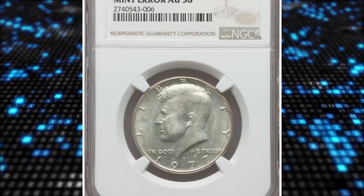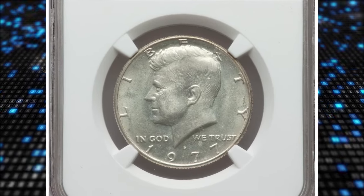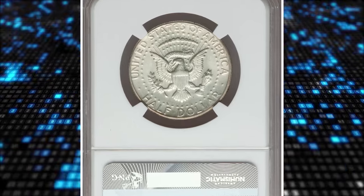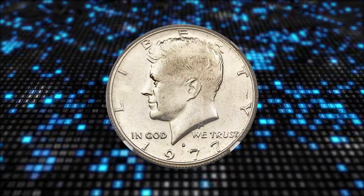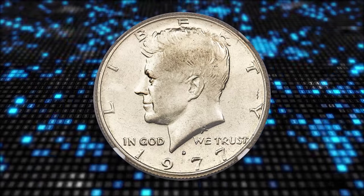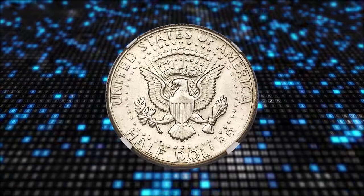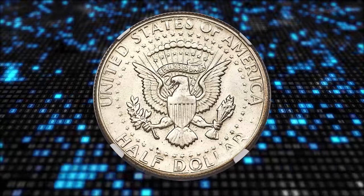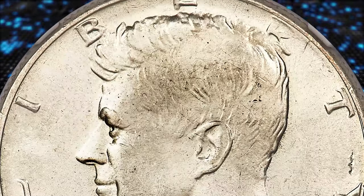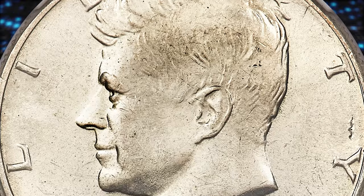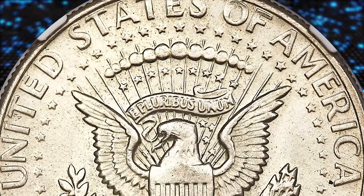Moving on with the 1977-D Kennedy half dollar struck on a 40% silver planchet. The standard weight of a silver clad half is 11.50 grams, and the expected weight of a copper-nickel clad half is 11.34 grams. The San Francisco Mint struck silver clad bicentennial halves, and several such planchets somehow ended up at the Denver Mint with 1977-D dies, making them the final 40% silver alloy half dollars.